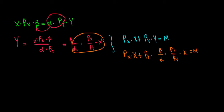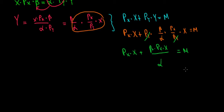Now let's do some simplifications. We have here price of y and price of y cancel out. So we are left with price of x times x plus beta times price of x times x divided by alpha equals to m. Now what do we see here? We see a common factor: price of x times x over here and price of x times x over here.